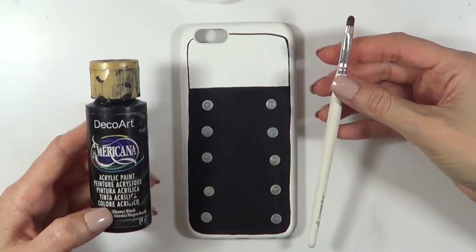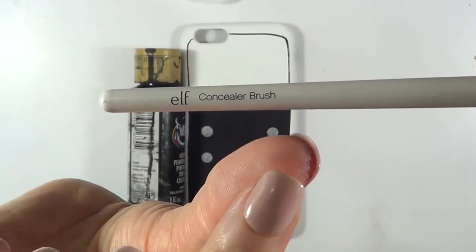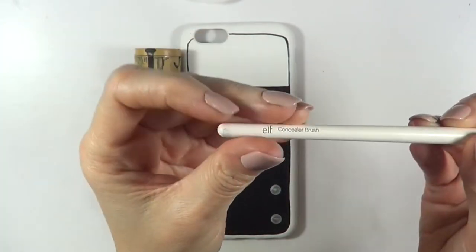I'm going to be taking my black acrylic paint, and in this case I'm using this makeup brush that I sometimes use for my eyeshadow. I'm going to be putting a black dot inside those silver dots.